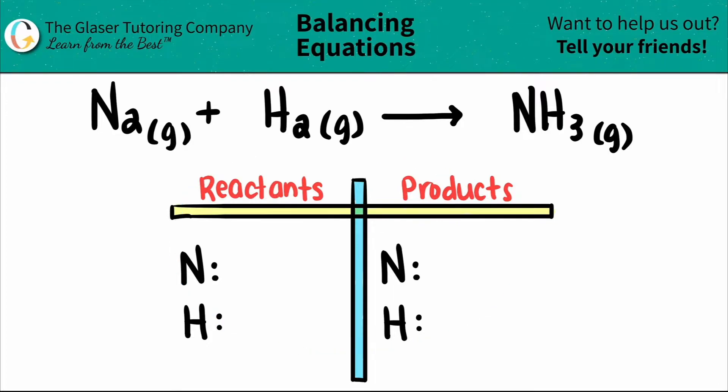I already wrote out a chart and the elements that I see that are the same on both the left and the right sides, aka the reactants and the products. All we have to do is just write out the total number, and then we'll start balancing.